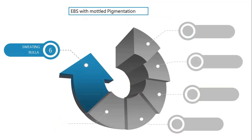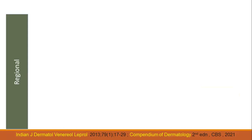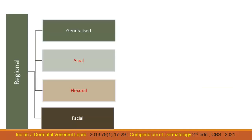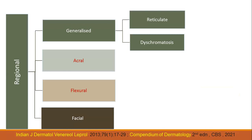What classification would I use? We published a review article in the IJDVL a few years back, and this is a classification I find very useful. It's called the regional distribution of these disorders. There are four regions: generalized, acral, flexural, and facial. In the generalized, again, we have two categories: reticulate and dyschromatosis.